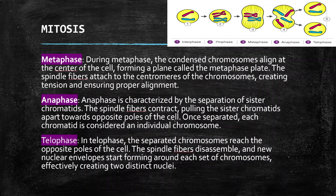Then we have metaphase. During metaphase, the condensed chromosomes align at the center of the cell, forming a plane called the metaphase plate. The spindle fibers attach to the centromeres of the chromosomes, creating tension and ensuring proper alignment.